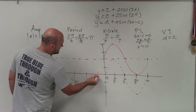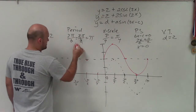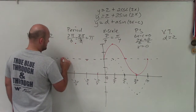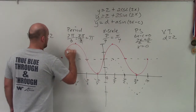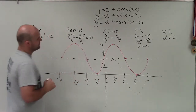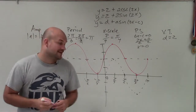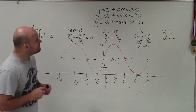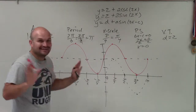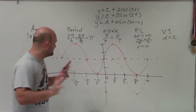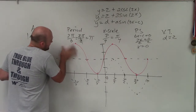The next points would be minimum, intercept, maximum, intercept. That is how you graph — wait, I forgot! I need to graph the cosecant. The sine graph needs to be dashed. We're not graphing sine, we're graphing cosecant.